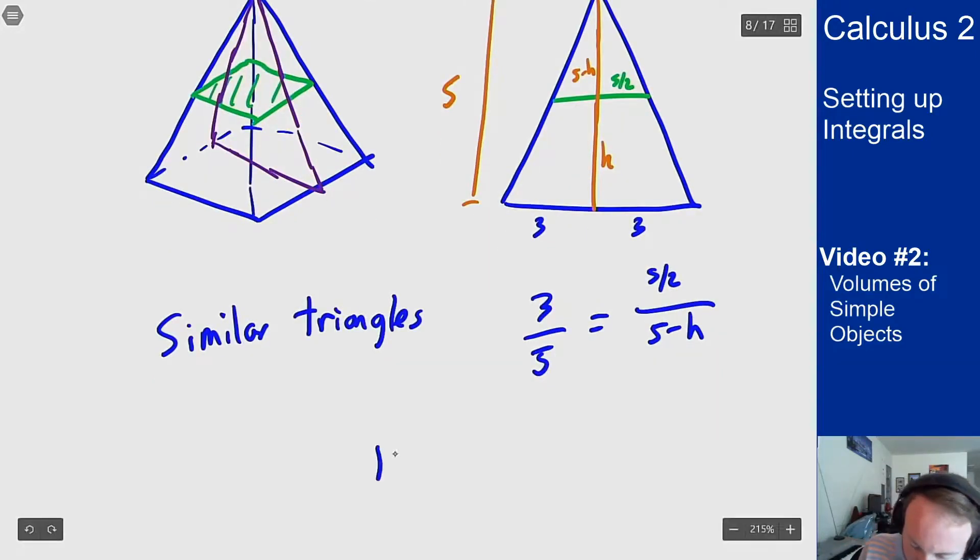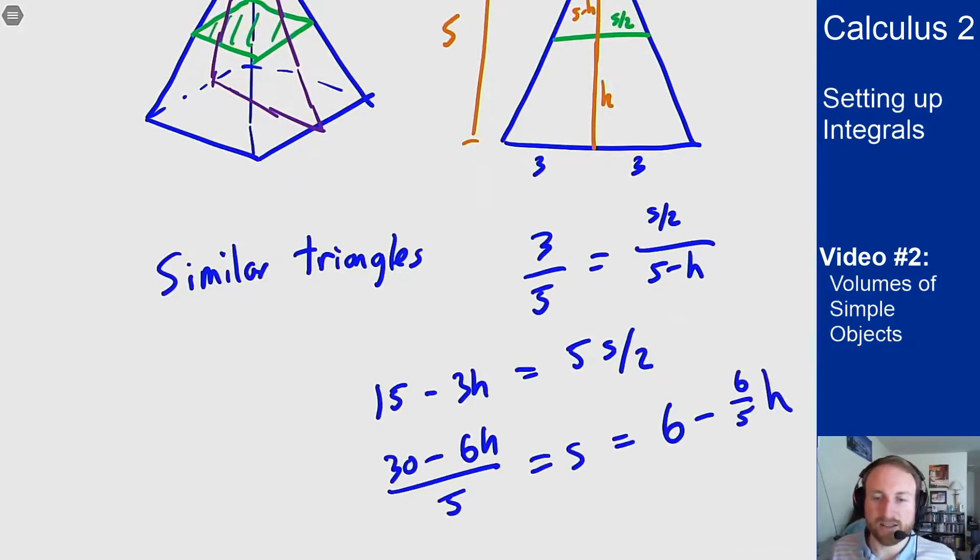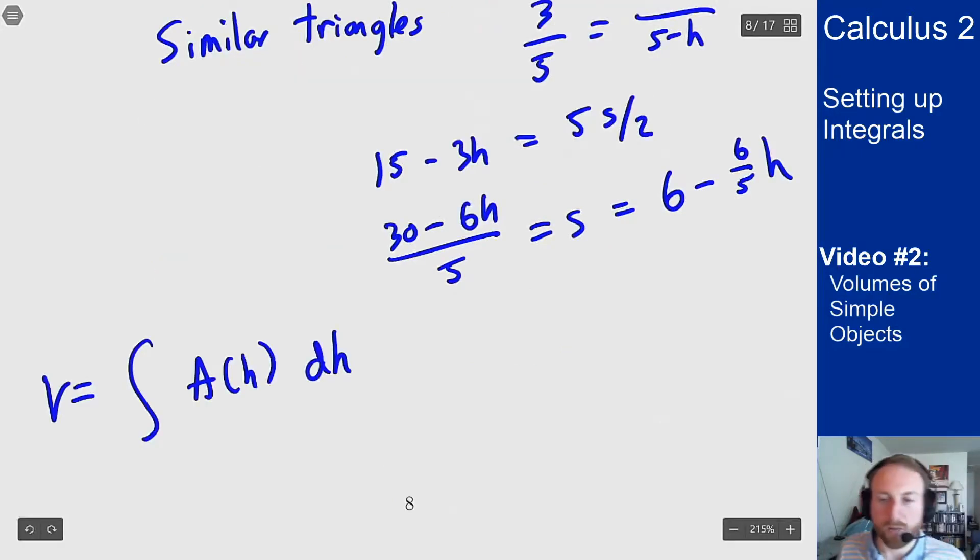So I cross multiply and I get that formula right there. 6 minus 6 over 5 h, that is s. Now if I want to find this volume, I have to integrate the area as a function of h times dh. And what should my bounds of this integral be? Well it should start at 0 because that's where I'm starting my height calculation. And it should go up to the height of this pyramid, which is 5.